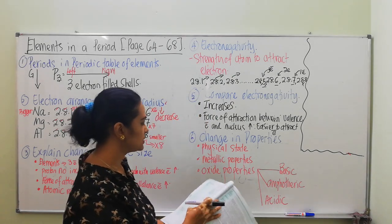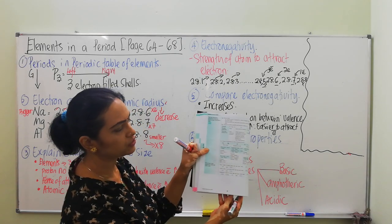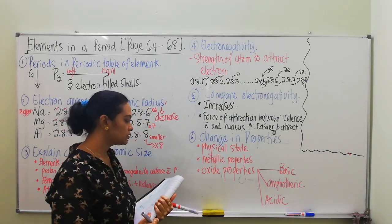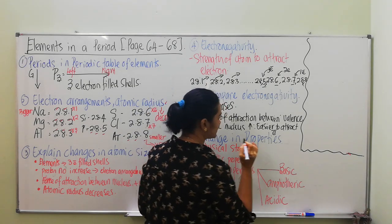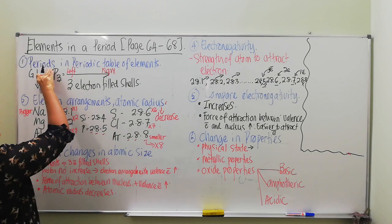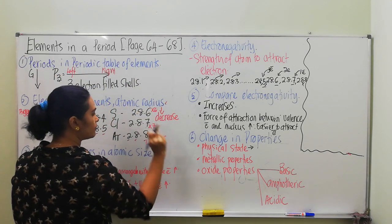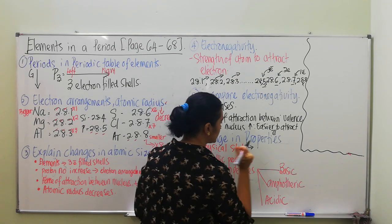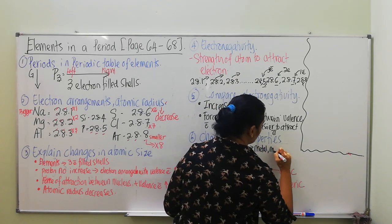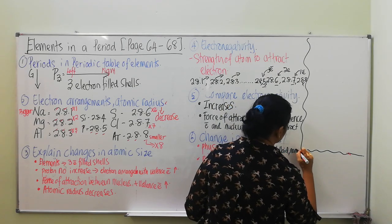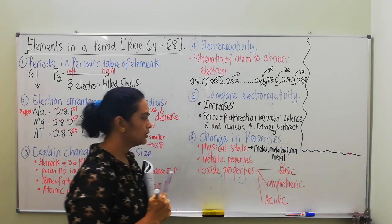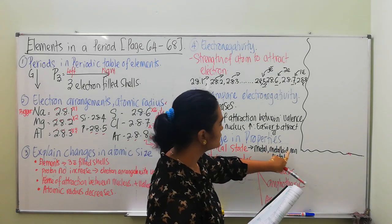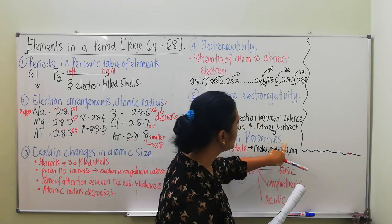Now let's go to page 66 — change of properties. Let's start with physical state. When teacher says 'going across the period,' that means from left to right. Physical state changes like this: metal, then metalloid, then non-metal. This is what you need to remember.